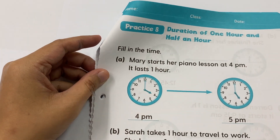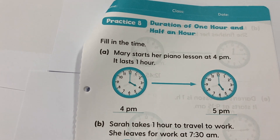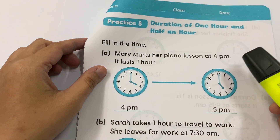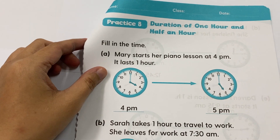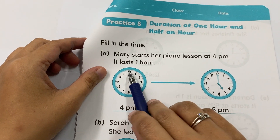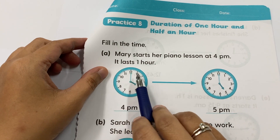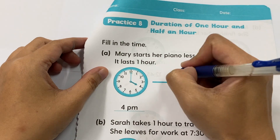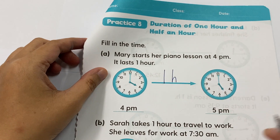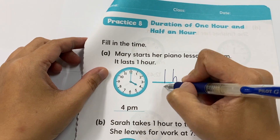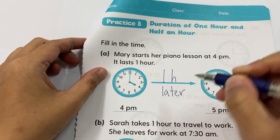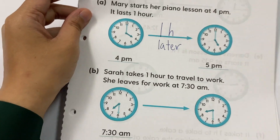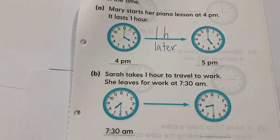Let's take a look at this. Mary starts her piano at 4 p.m. It lasts for one hour. One hour means from four it goes all the way until five, so one hour later it will be 5 p.m.